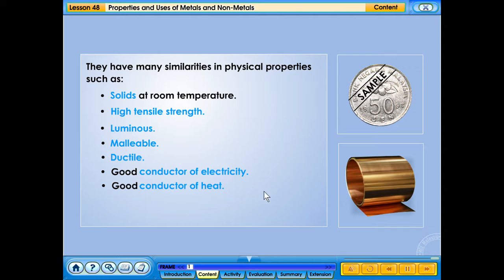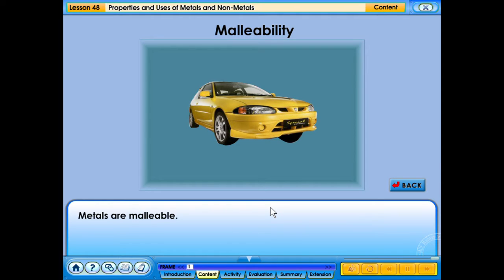Malleability. Metals are malleable. This means they can be hammered into different shapes without breaking up. Car body panels are shaped like this. Click the sports car to view a video of how a car body panel is shaped.